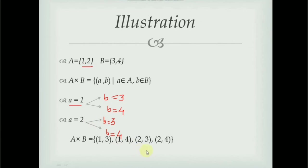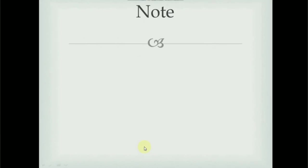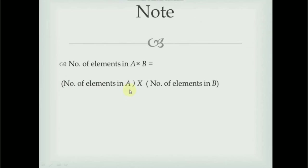To find the Cartesian product of two sets, first select each element from the first set one by one, then pair that element with all possible elements from the second set. Note that the number of elements in A cross B equals the number of elements in A multiplied by the number of elements in B.